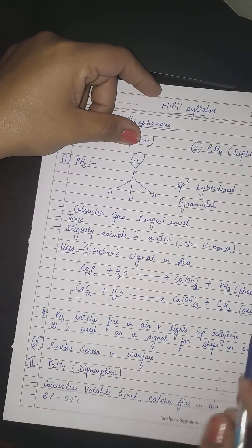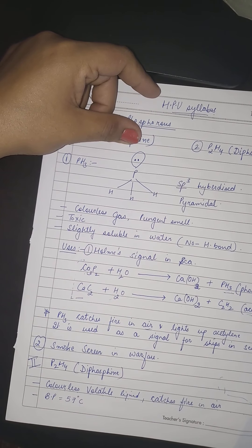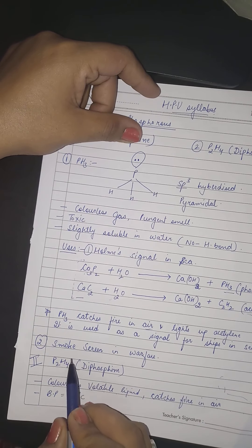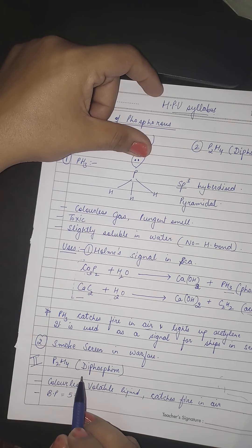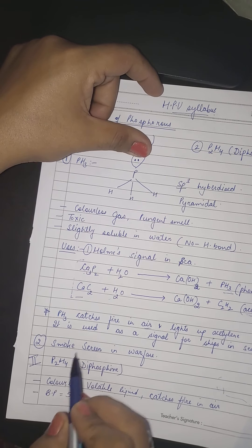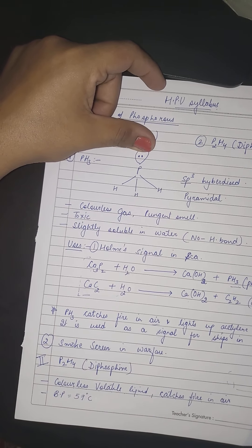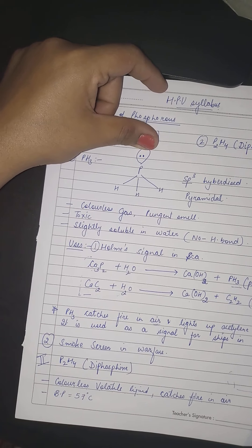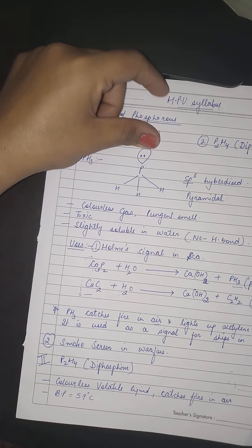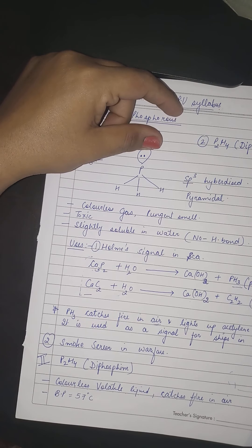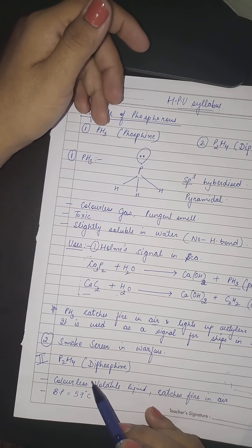Ek aur method hai: PH₃ ko heat karein ya burn karein — yeh bahut zyada smoke (dhuwa) create karti hai. Isliye PH₃ ko warfares mein smoke screen ke roop mein use kiya jaata hai.